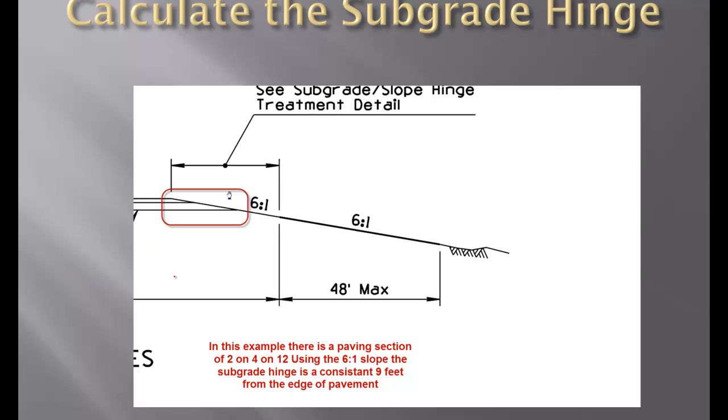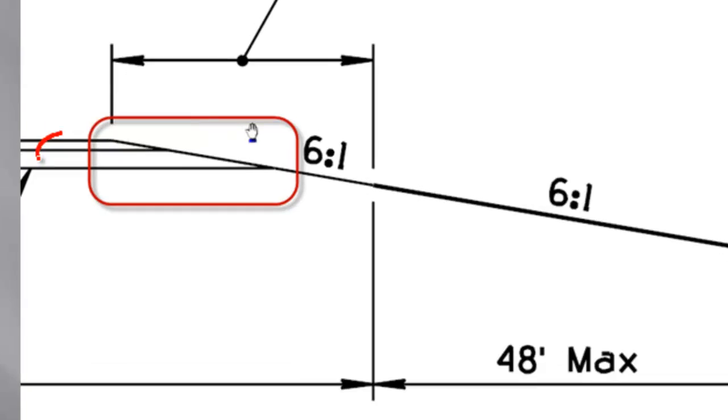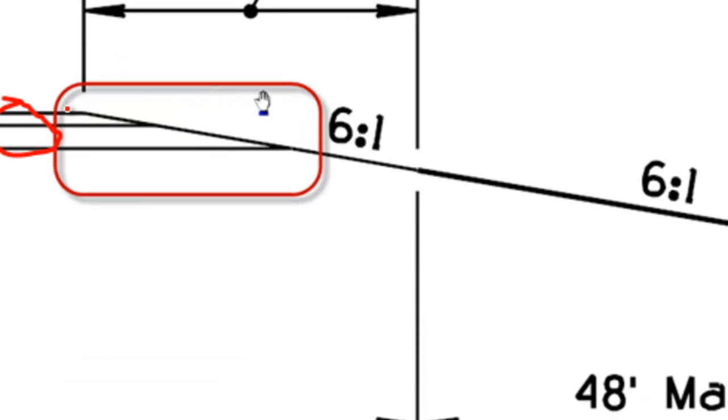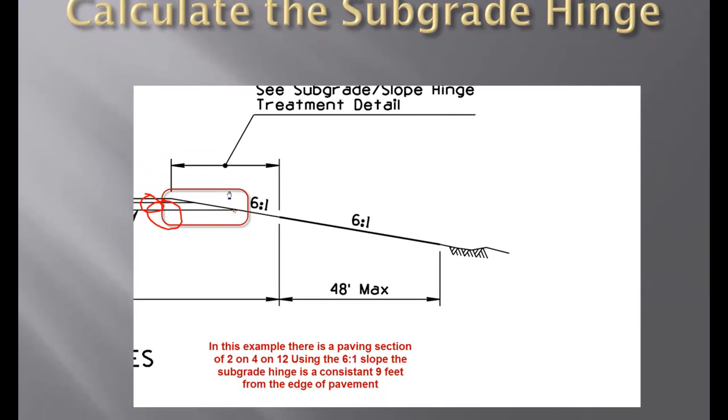In our example, we basically have a 2 on 4 paving section, which is going to be right here, and then we have a foot of base which happens underneath it. So, we have basically 18 inches of material that is going to take us out to this subgrade hinge right here.